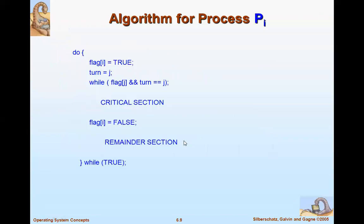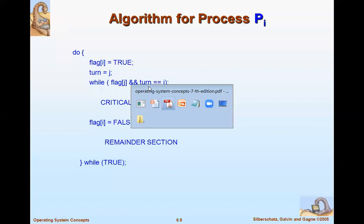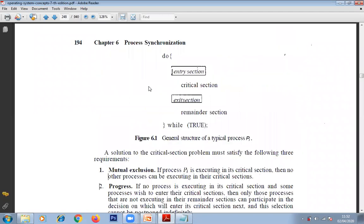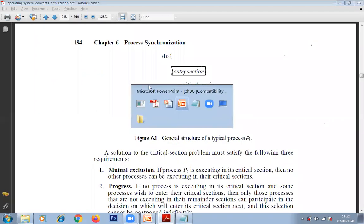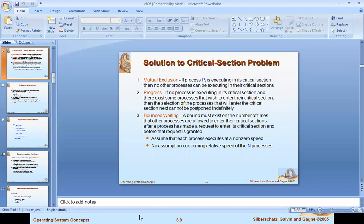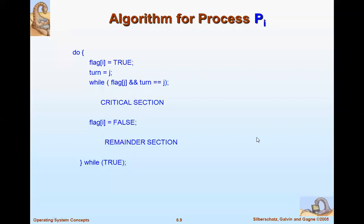Looking at the algorithm for implementing process Pi: there are three sections — critical section, exit section, and remainder section. This is the same structure shown in the PDF — critical section, exit, and remainder sections.